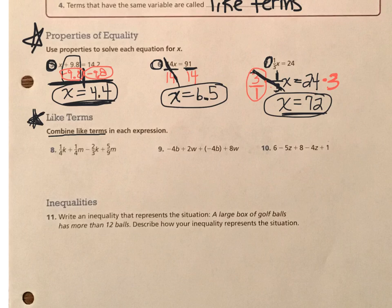So on 8, 9, and 10, you are looking for those terms or the pieces of the expressions that are alike, and you're going to put them together. So what I'd like for you to do is take a look at number 8. Let's try this one together so that you can see how it works. And then I'll have you try numbers 9 and 10 on your own.